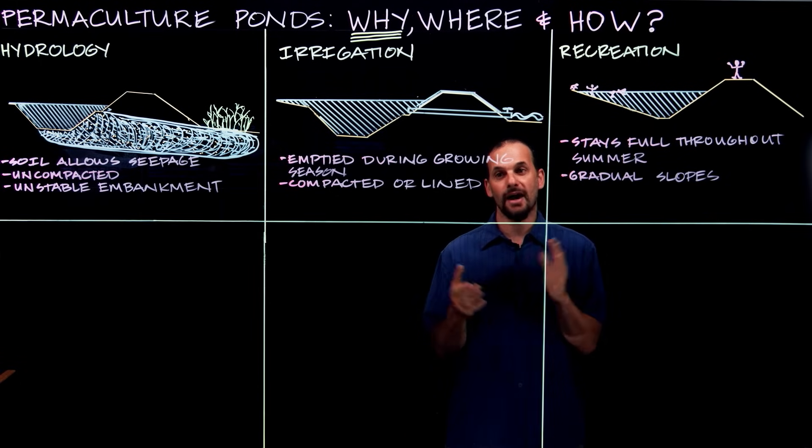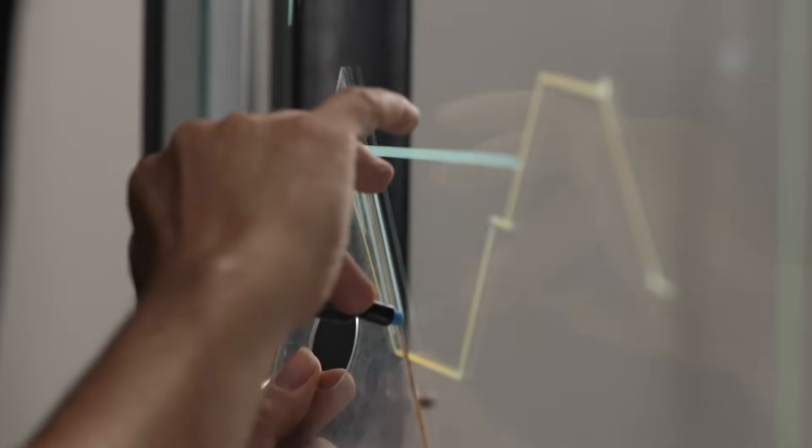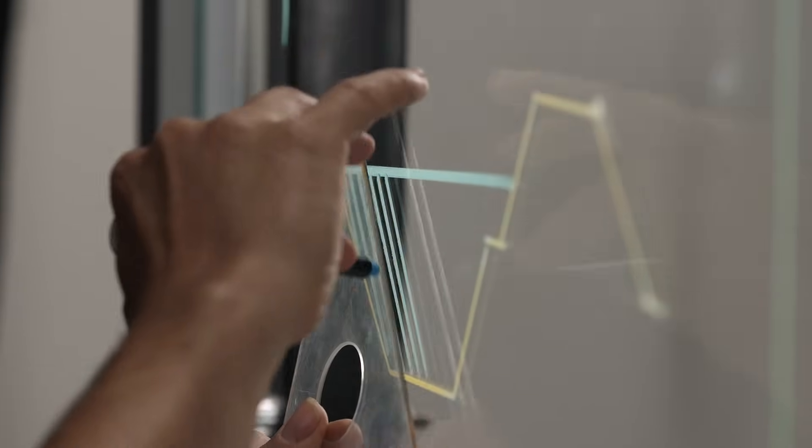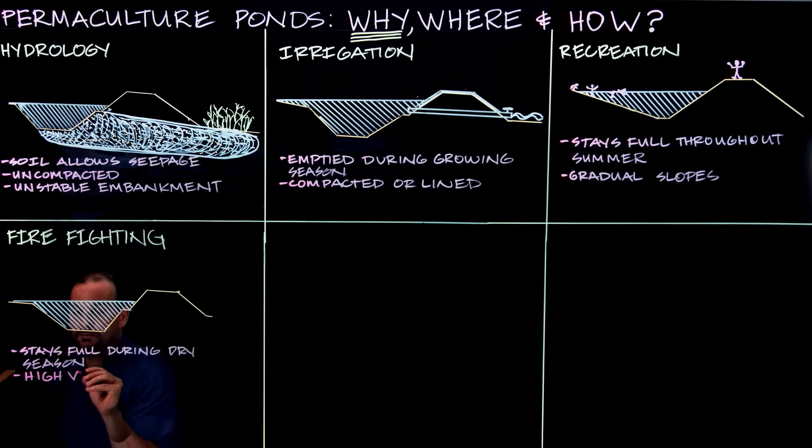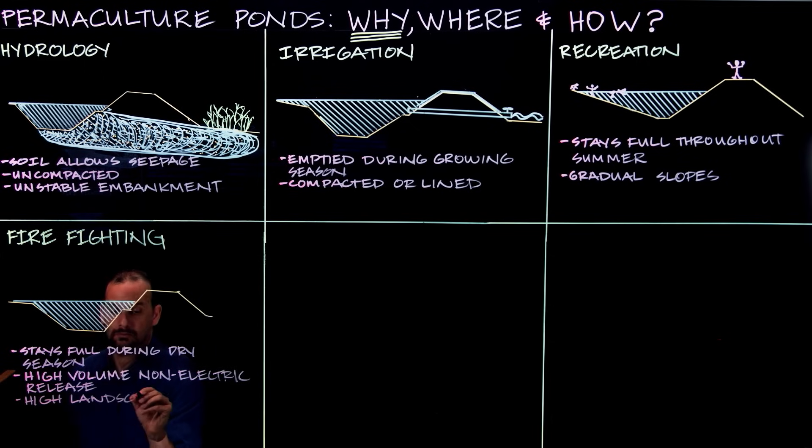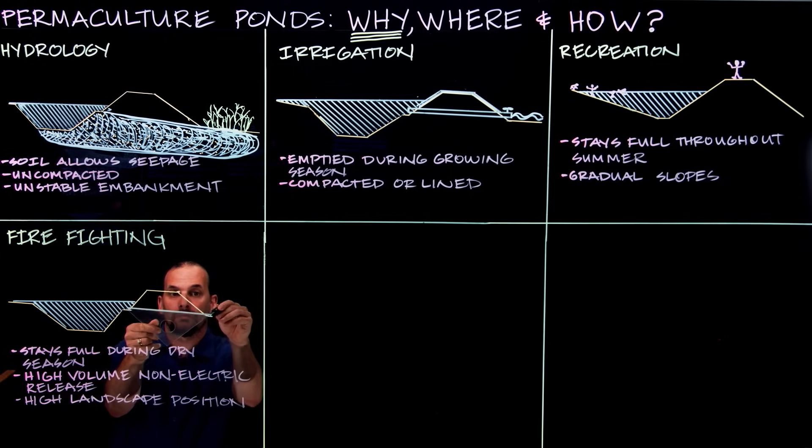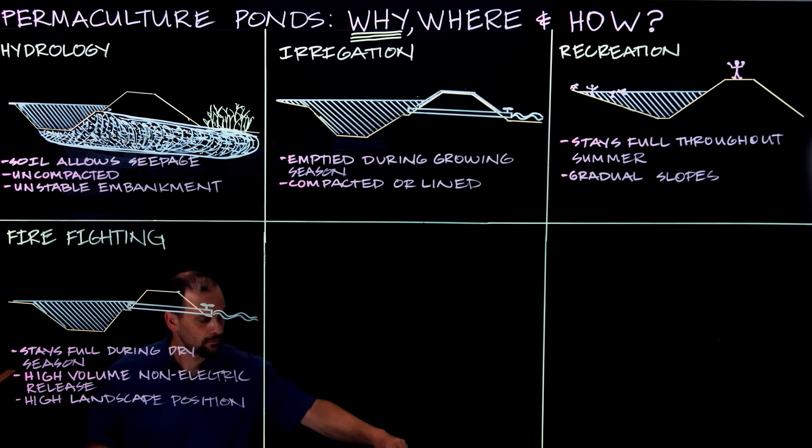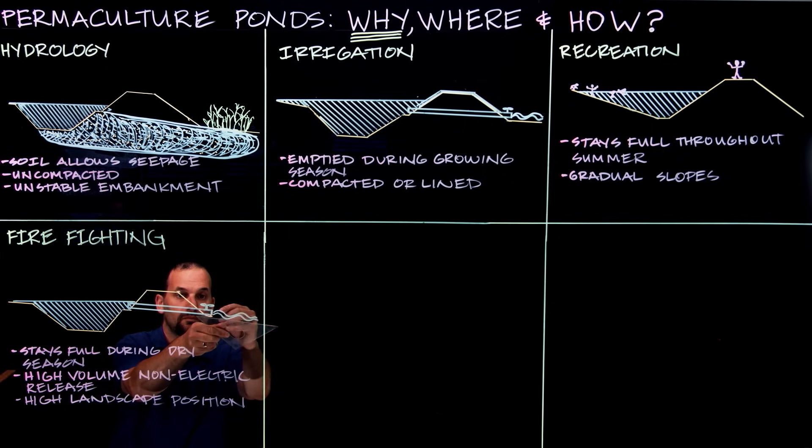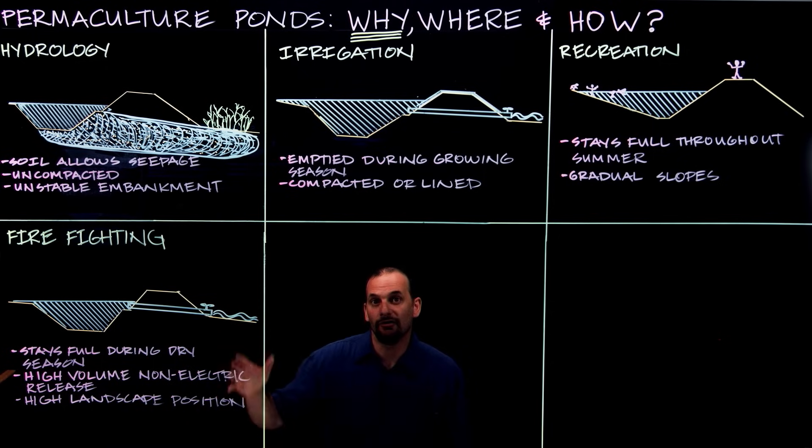Now another pond that wants to stay full all throughout an entire dry season is a firefighting pond. So the water in a firefighting pond needs to be able to be released from the pond in the event of a fire to either flood some sort of fire containment line, feed a fire hose, or pressurized sprinklers. But often in a fire the electricity goes out, so a firefighting pond needs to be able to gravity feed a firefighting system without electricity. This means it has to be placed in a higher position within the landscape.